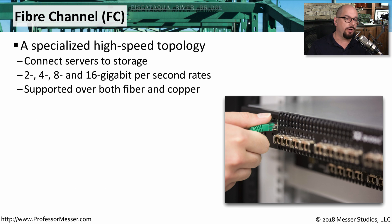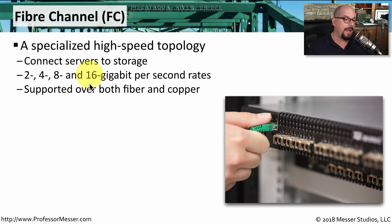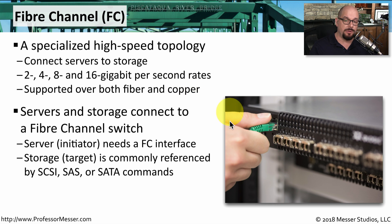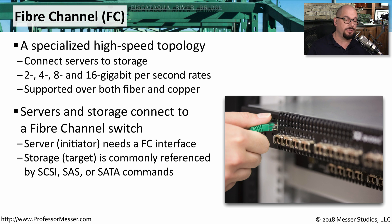One popular type of storage area network is Fiber Channel, or FC. This is a high-speed topology that has been specifically built for storage area networks, built to connect servers directly to storage devices. It can support 2, 4, 8, and 16 gigabit per second rates, and you can run this traffic over both fiber and copper connections. To use a Fiber Channel topology, you would usually have a Fiber Channel switch — you plug in your server with Fiber Channel and your storage device with Fiber Channel. The server would commonly use well-known protocols such as SCSI, Serial Attached SCSI, or SATA commands to send data over the storage area network.